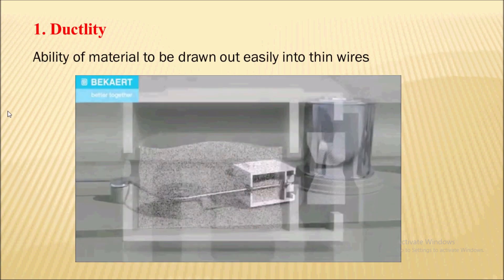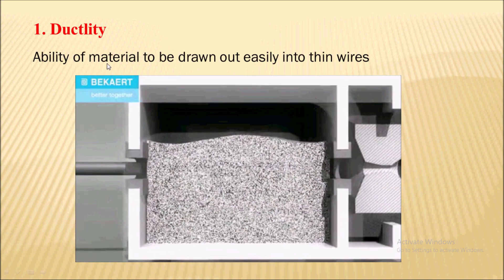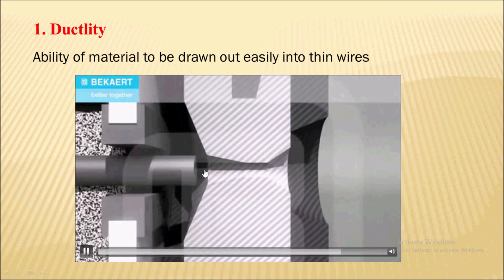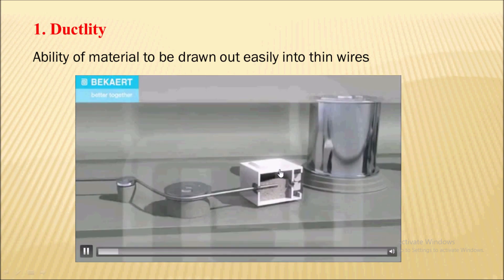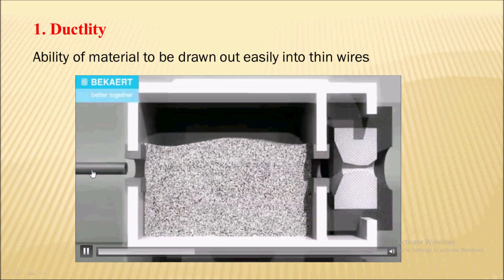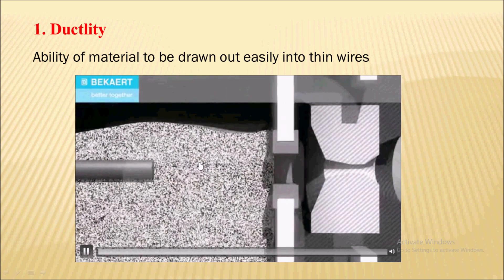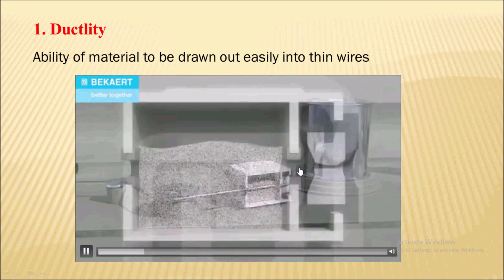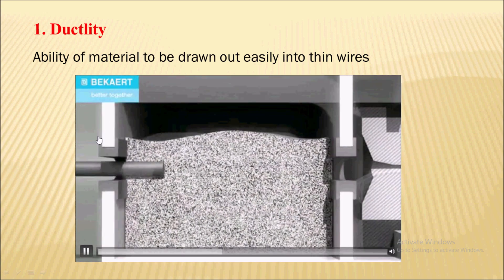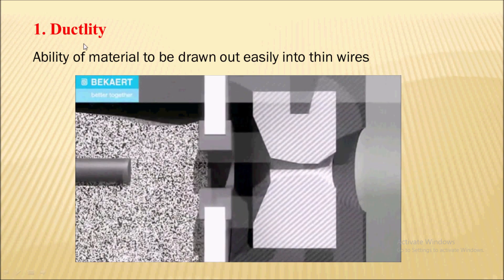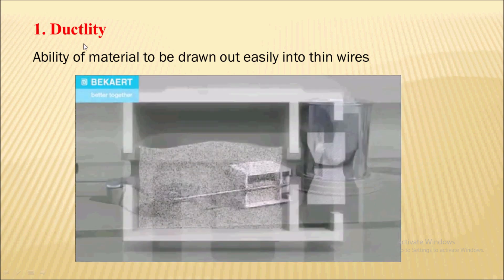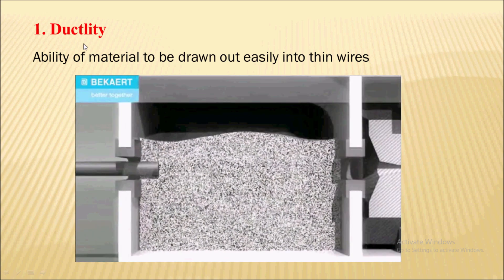The first property is ductility. Ductility is nothing but the ability of a material to be drawn out easily into a thin wire. In this animation you can see a rod which is passing through a die and it can be easily drawn into a thin wire. So this ability of material is nothing but ductility.